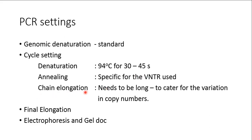What is different from conventional PCR is the chain elongation time. Because we are not sure of the number of repeats or how long the fragment length will be, we need to cater for that with a longer chain elongation time. This can be standardized in your lab with experience, depending on the population, and could be between one minute to one and a half minutes. Then there is a final chain elongation step, after which you do electrophoresis and gel documentation to visualize the VNTRs.